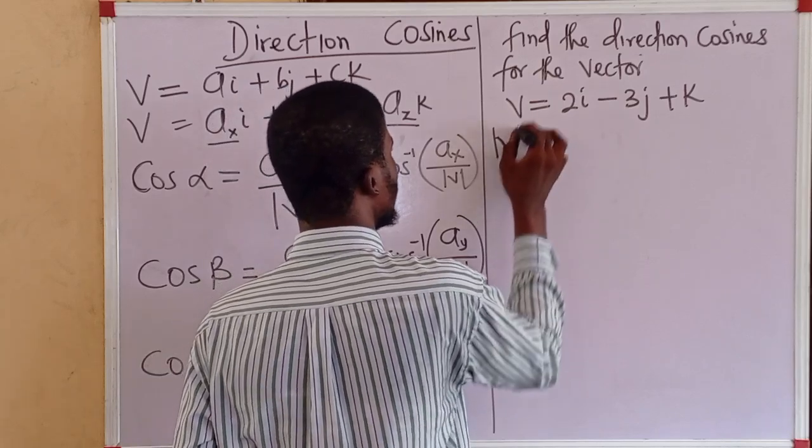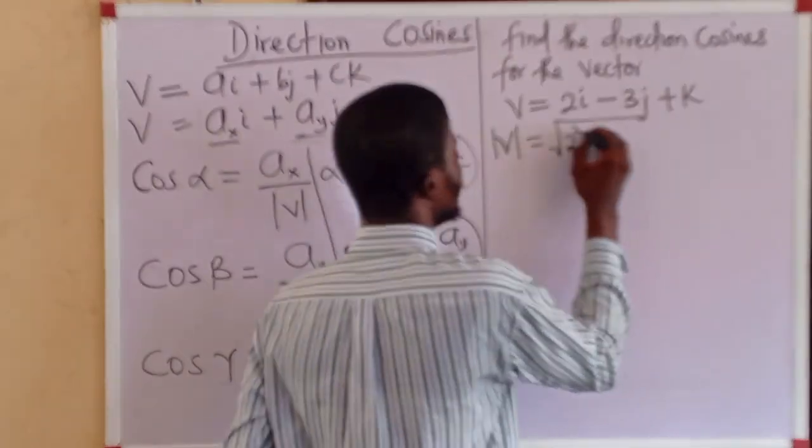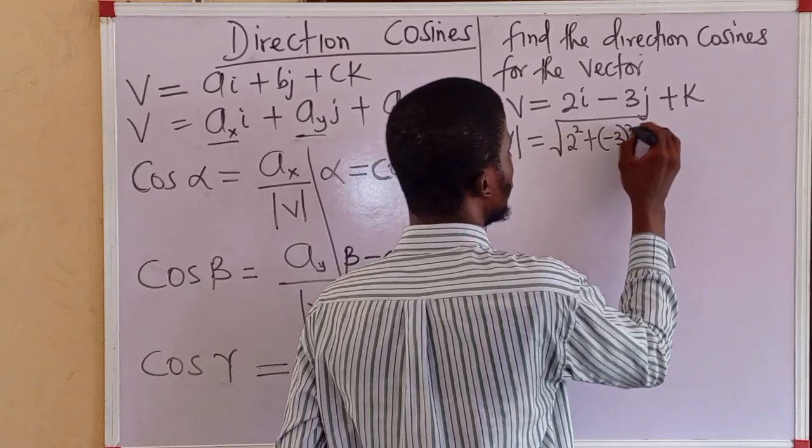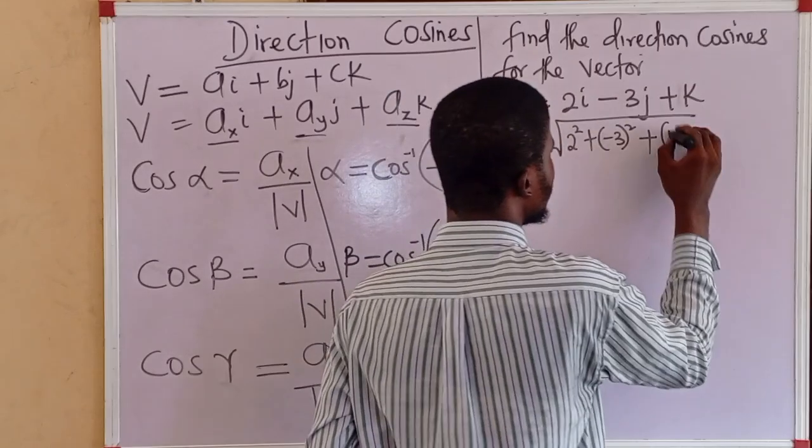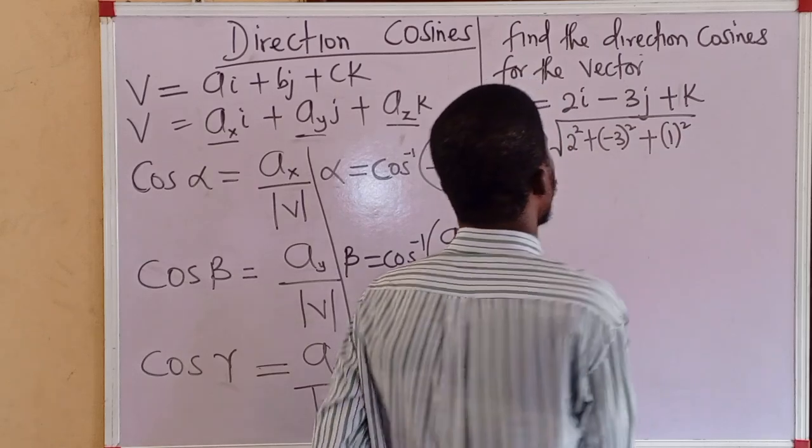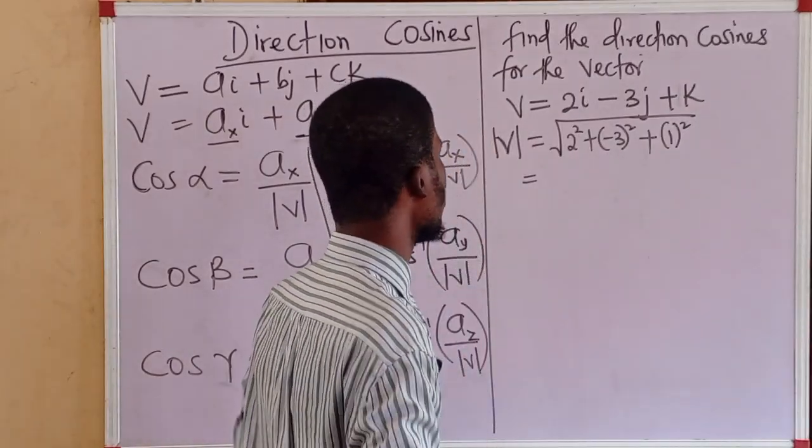First of all, the absolute value of the vector. That would be 2 squared plus minus 3 squared plus 1 squared.